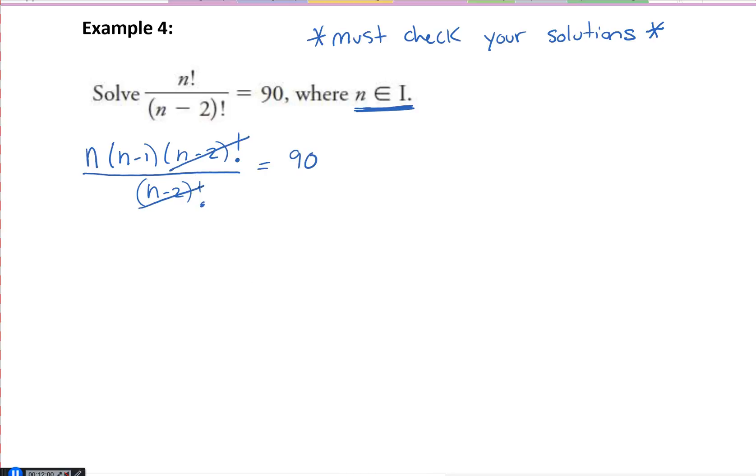Let's cancel that out. And I've got n times n minus one is equal to 90. What do we do next? Distribute the n. So I've got n squared minus n is equal to 90.